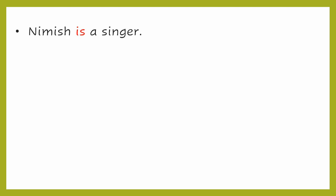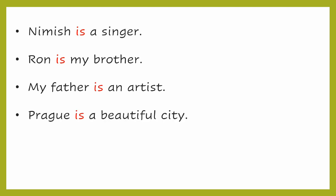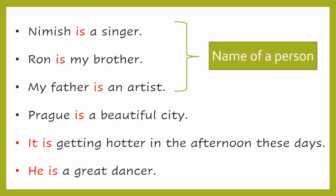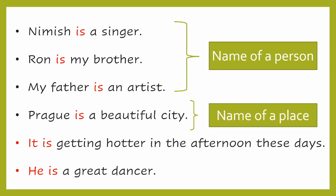Now let's look at some more examples with IS. In the first three sentences, we used IS with the name of a person. In the third sentence, we used it with a relation. For example: my father is an artist, my mom is a teacher, my sister is a guitarist. In the fourth sentence, we used it with the name of a place — Prague is a beautiful city.